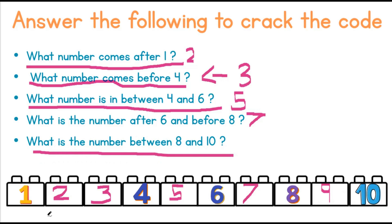Our code is 1, 2, 3, 4, 5, 6, 7, 8, 9, 10. We have 10 blocks and they are in order from smallest to biggest.